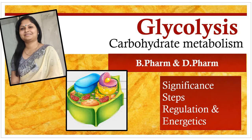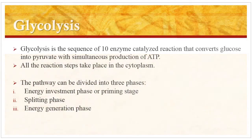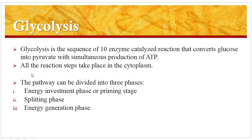Glycolysis is the sequence of 10 enzyme-catalyzed reactions that converts glucose into pyruvate with the simultaneous production of ATP. All the reaction steps take place in the cytoplasm, so the cytoplasm is the site of the reaction. Glycolysis is an oxidative process in which 1 mole of glucose is partially oxidized to 2 moles of pyruvate. This unique pathway occurs aerobically as well as anaerobically and does not involve any molecular oxygen.